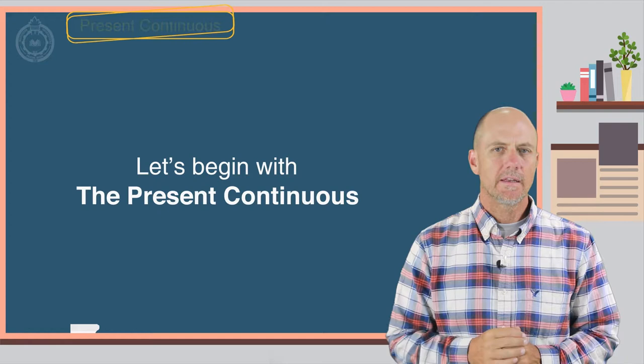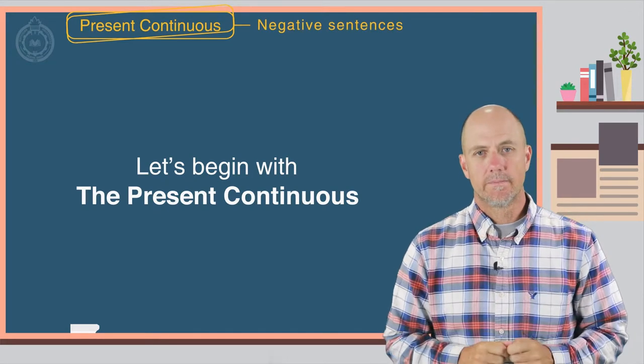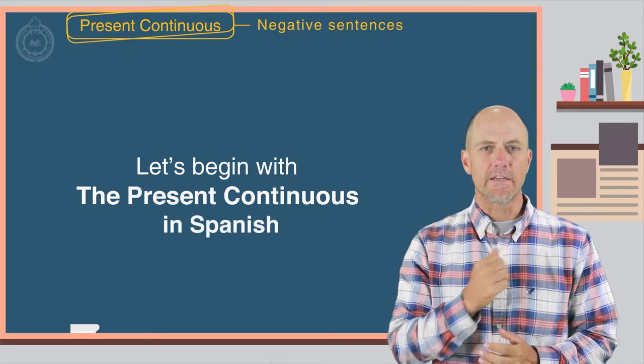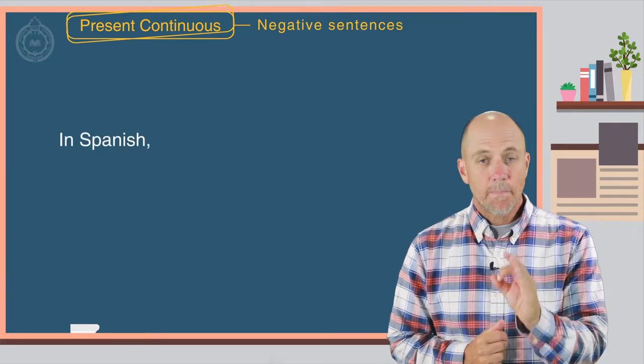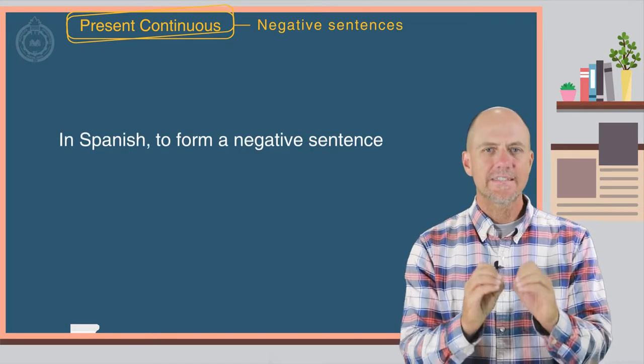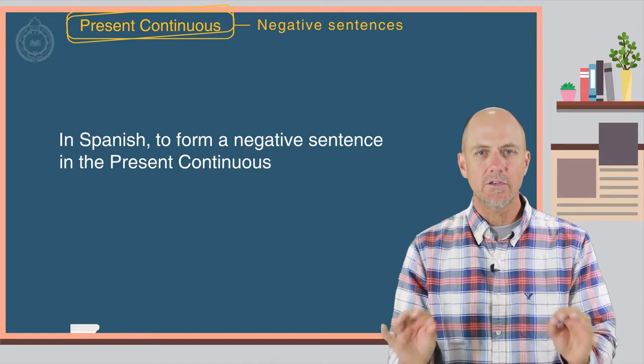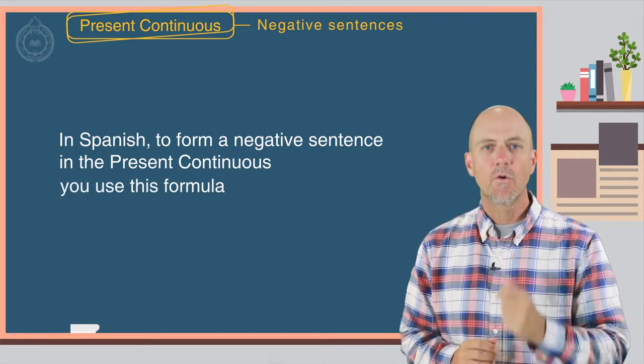Let's begin with what you already know, the present continuous in Spanish. In Spanish, to form a negative sentence in the present continuous, you use this formula: the subject plus the word no,